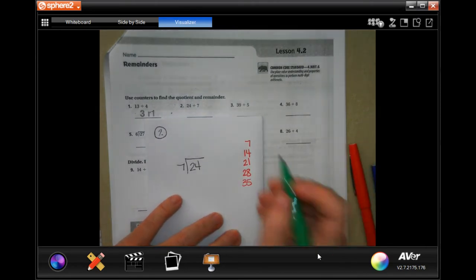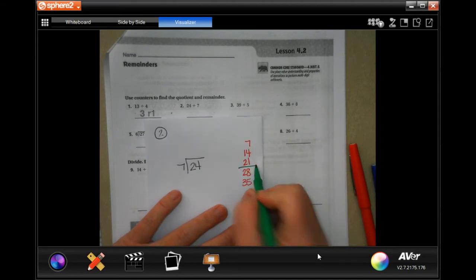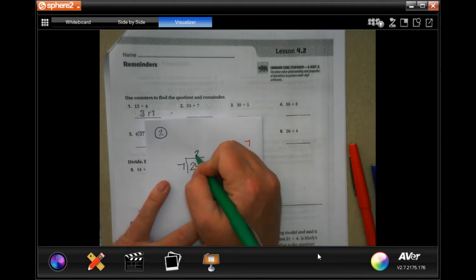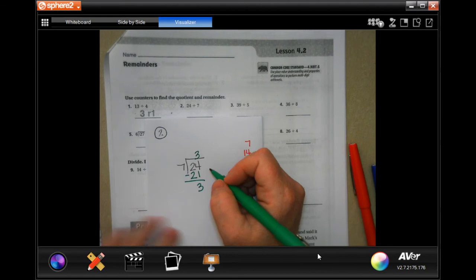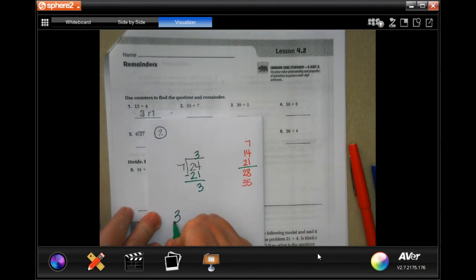Okay, so it looks like the highest I'm gonna be able to go is three. I'm gonna put a three up here. Three times seven is 21. I subtract, I get three. That makes my answer three remainder three.